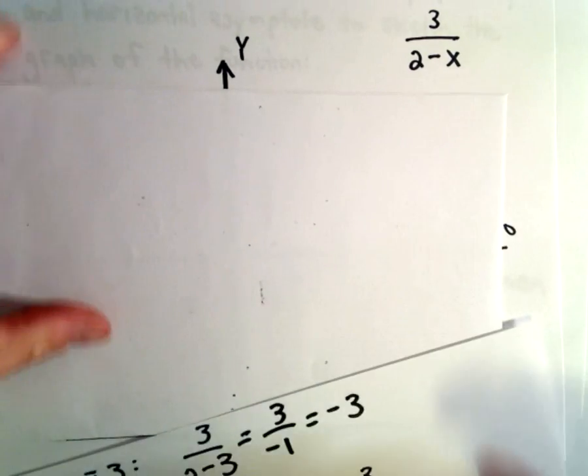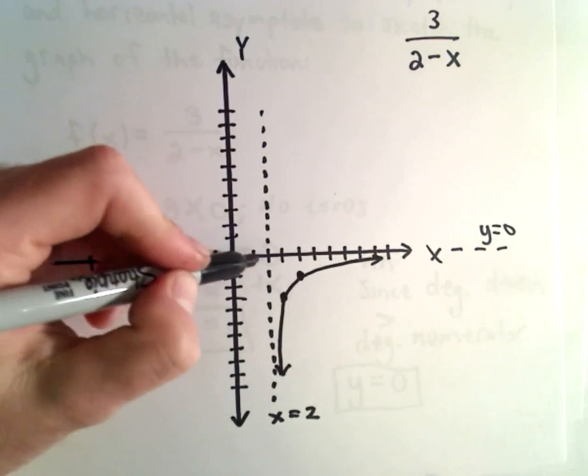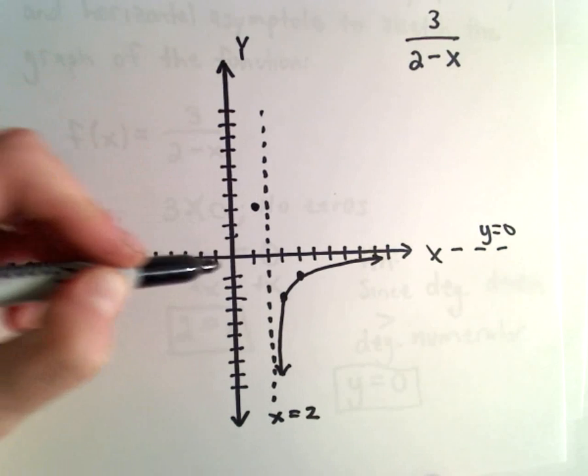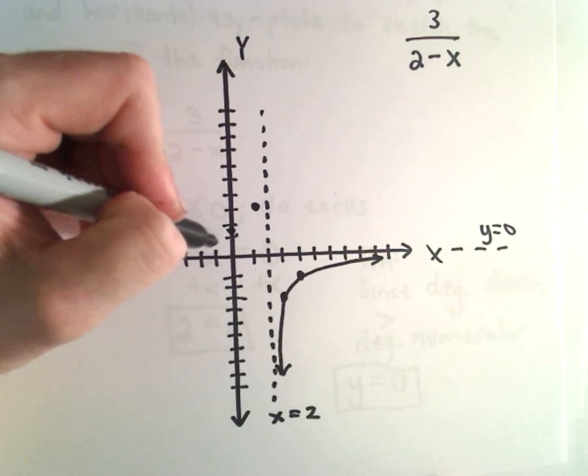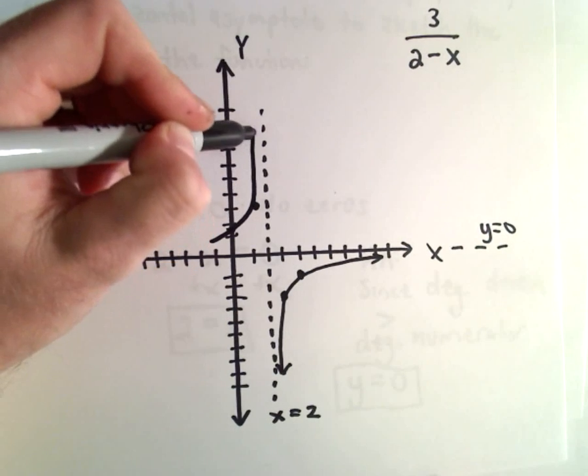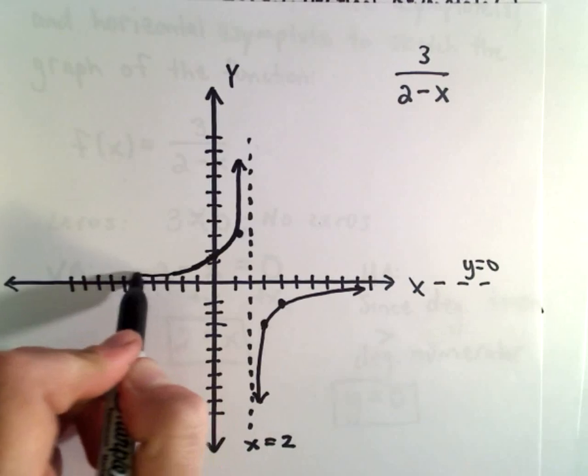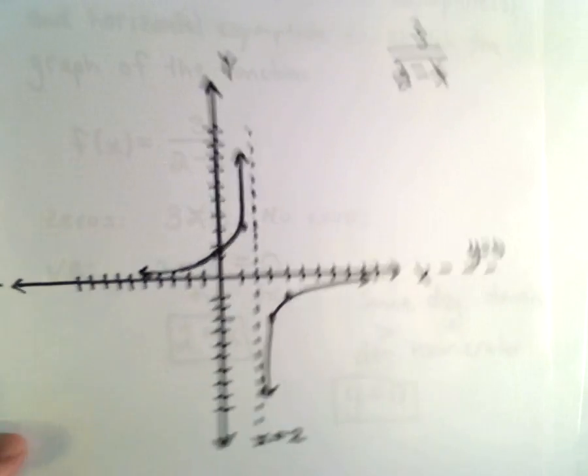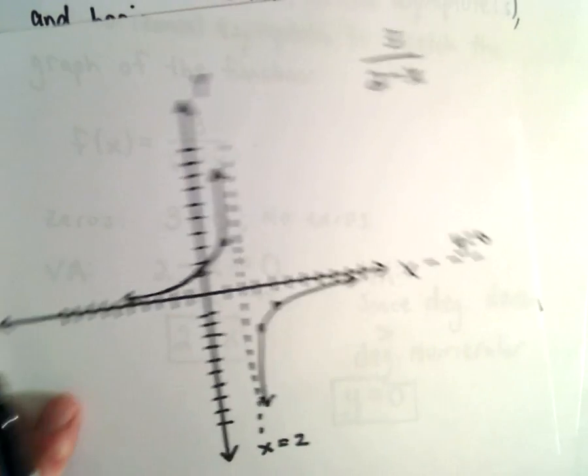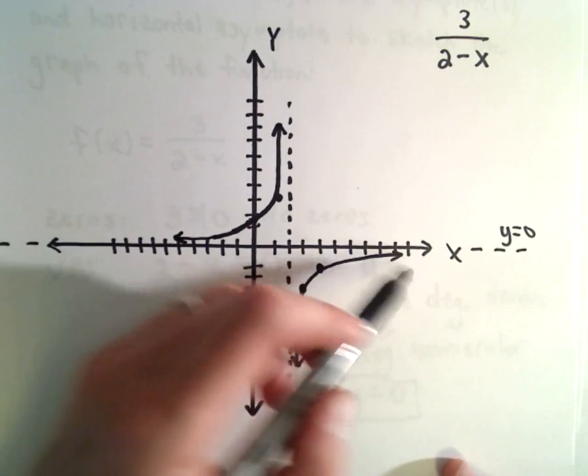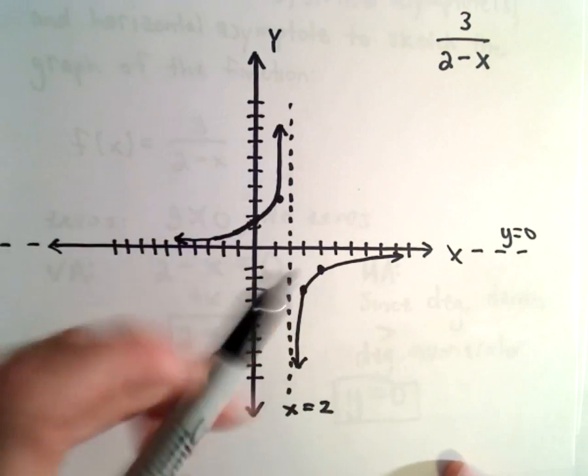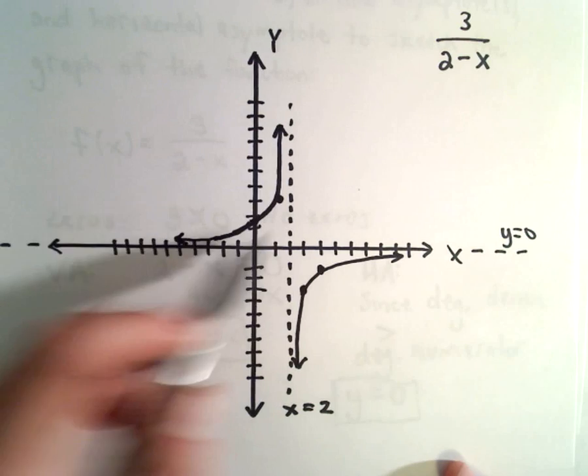So at 1, we're now up here at positive 3. At 0, we're at 3 halves. And if you plot some more points, your graph will have the same general shape as it did in the bottom right. It's just going to be flipped, and that's now in the top left.